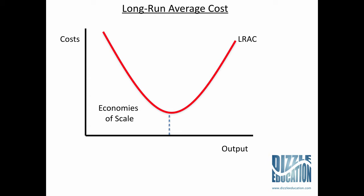However, firms can get too big, and they can start to experience dis-economies of scale, where, as your output increases, your average cost actually increases. What we are going to be looking at in this video is four different examples of situations where firms can suffer from these dis-economies of scale.